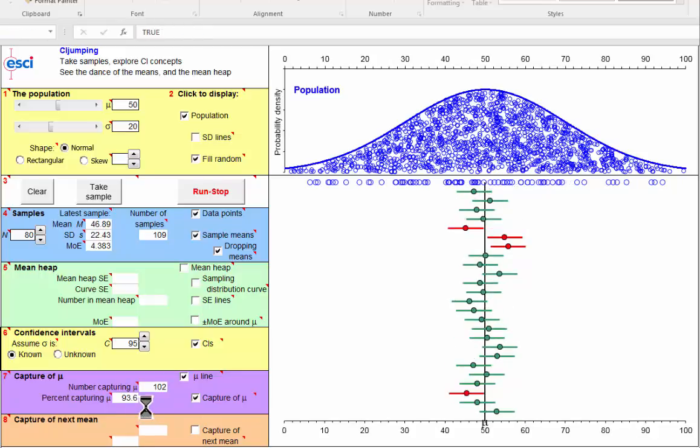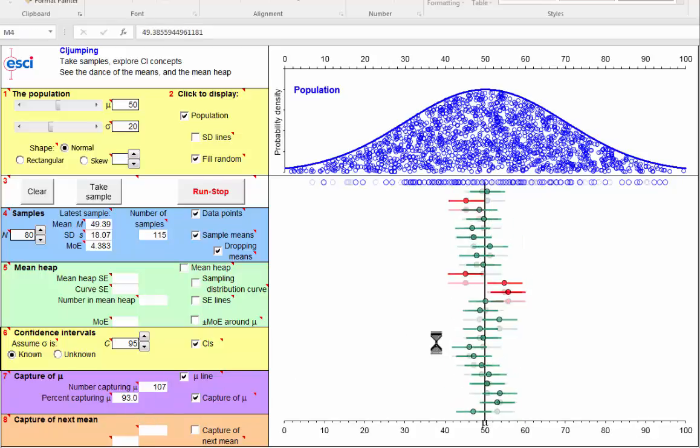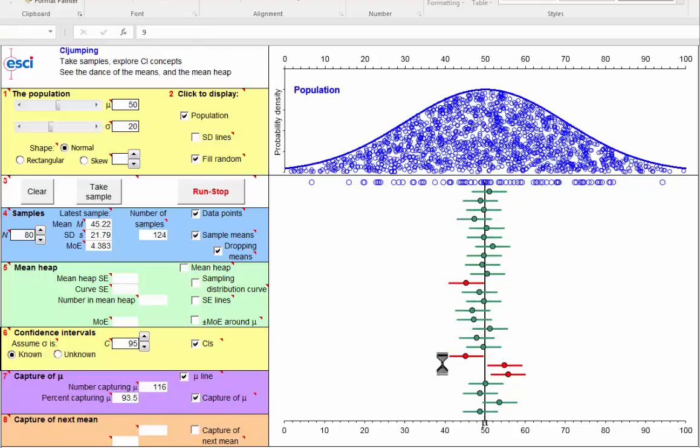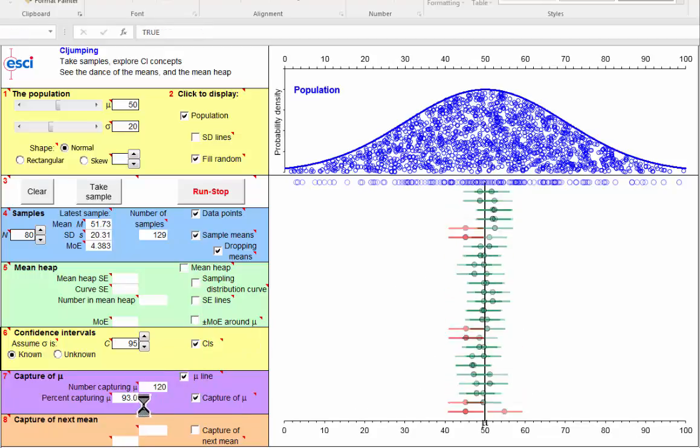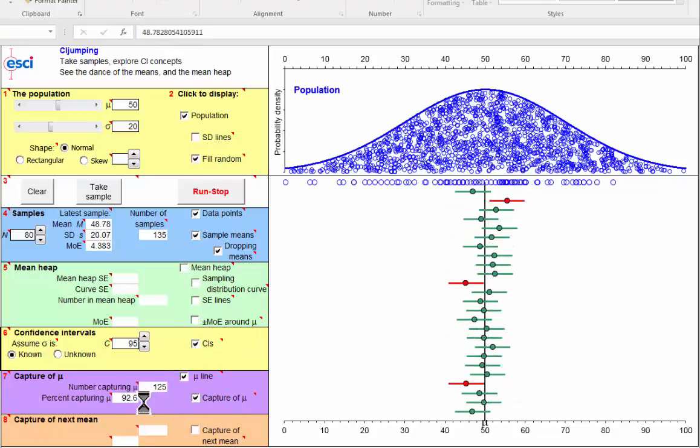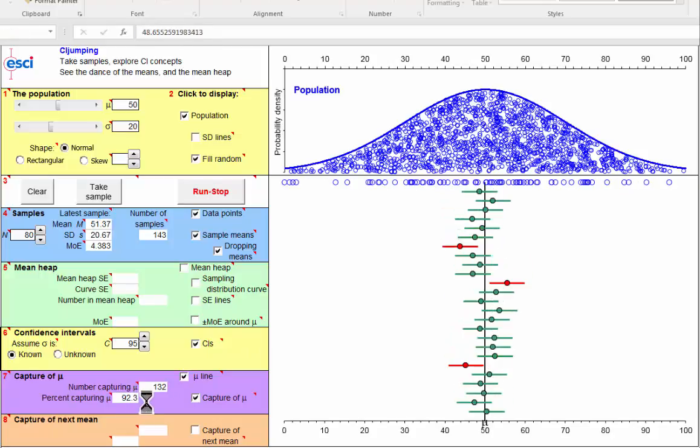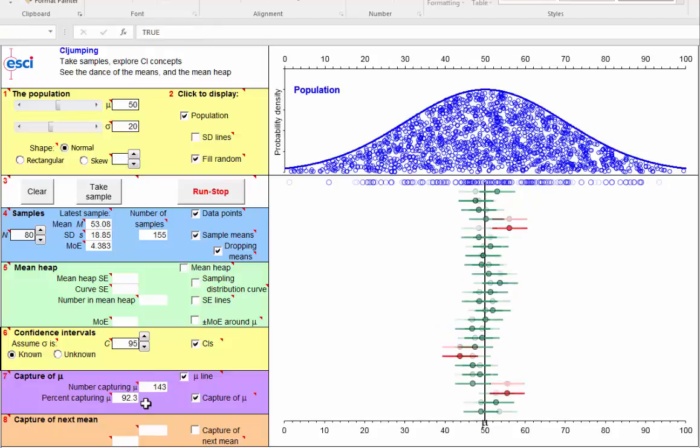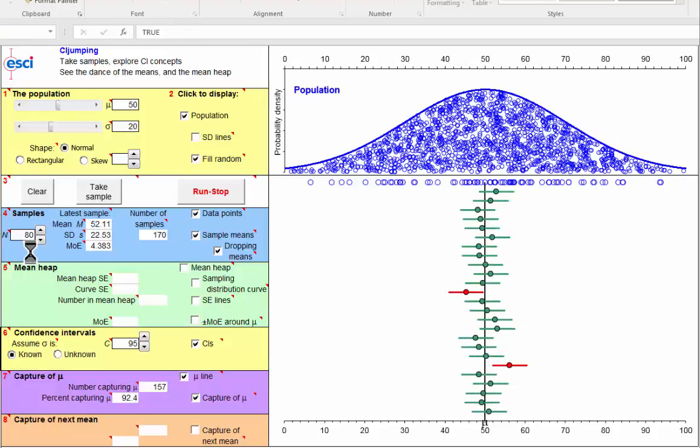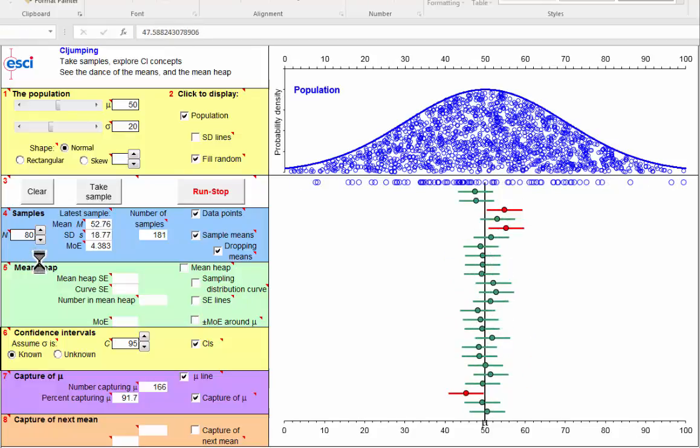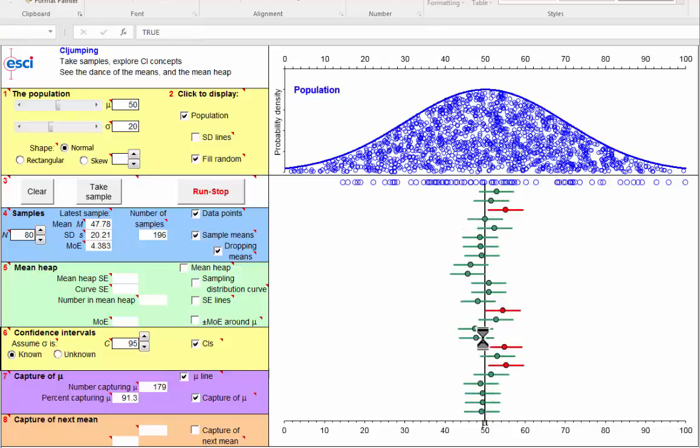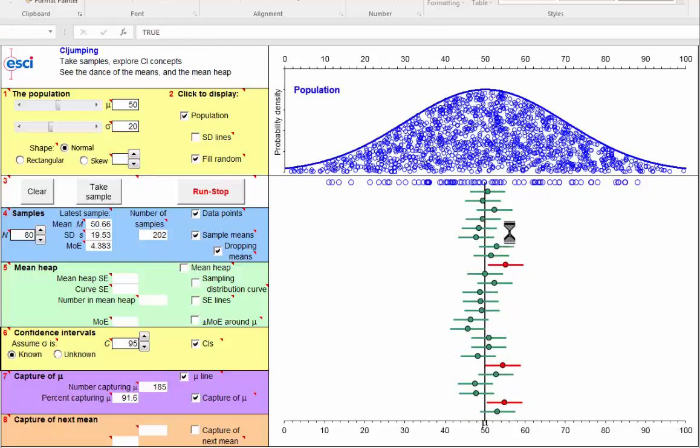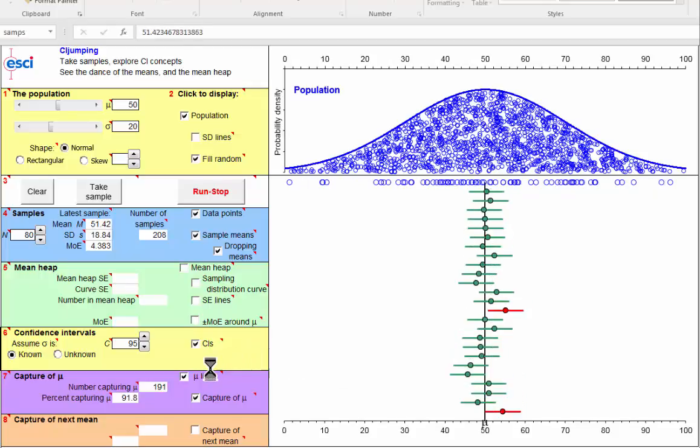So in the long run, we expect just 5% of them to be red and 95% of them to capture mu. And here we are on 93.6. Oh, we've got a big bunch there that dropped the percentage a bit, down to 93.2. And if we leave this running for a few minutes, we'll get very, very close to 95.0. And you can try this, of course, with a much smaller n or an even larger n, and you'd correspondingly get longer or shorter confidence intervals. But if they're all 95% intervals, you would get 5% red.